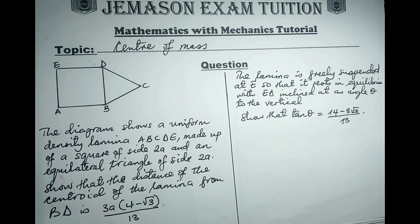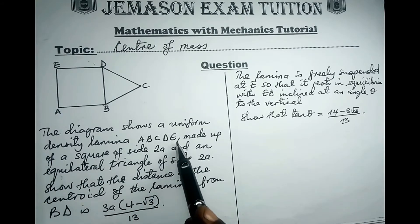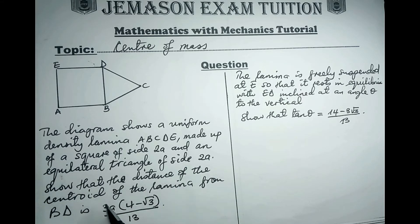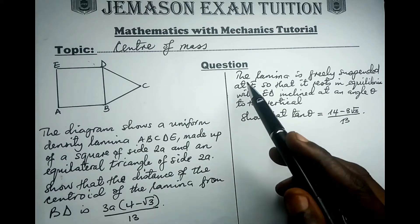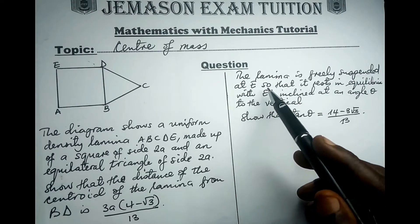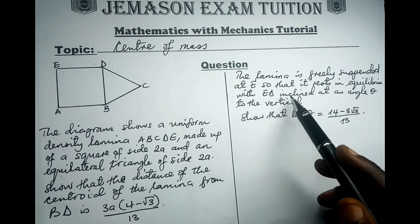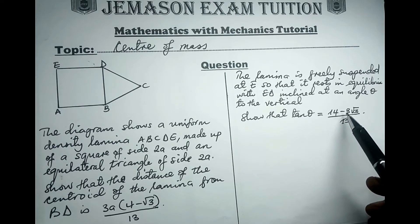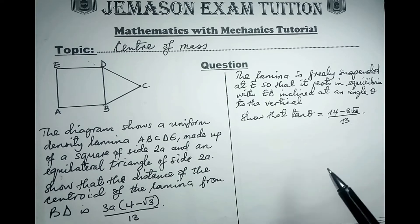Hello, in this session we focus on center of mass. This question says: the diagram shows a uniform density lamina ABCDE made up of a square of side 2a and an equilateral triangle of side 2a. Show that the distance of the centroid of the lamina from BD is 3a(4 − √3) / 13. The lamina is freely suspended at E so that it rests in equilibrium with ED inclined at angle θ to the vertical. Show that tan θ = (14 − 3√3) / 13.